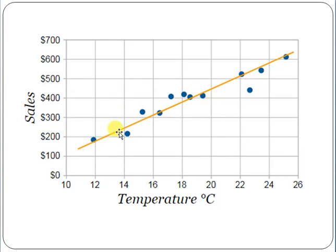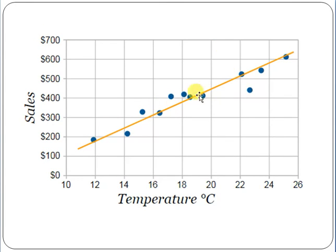Just see this trend line — you can understand easily that whenever the temperature on the horizontal axis is increasing, the sale is also increasing. The trend line tells you that whenever temperature is increasing, sale is also increasing, and if temperature is decreasing, the sale of ice cream is also decreasing. This is the concept of scatter diagrams.